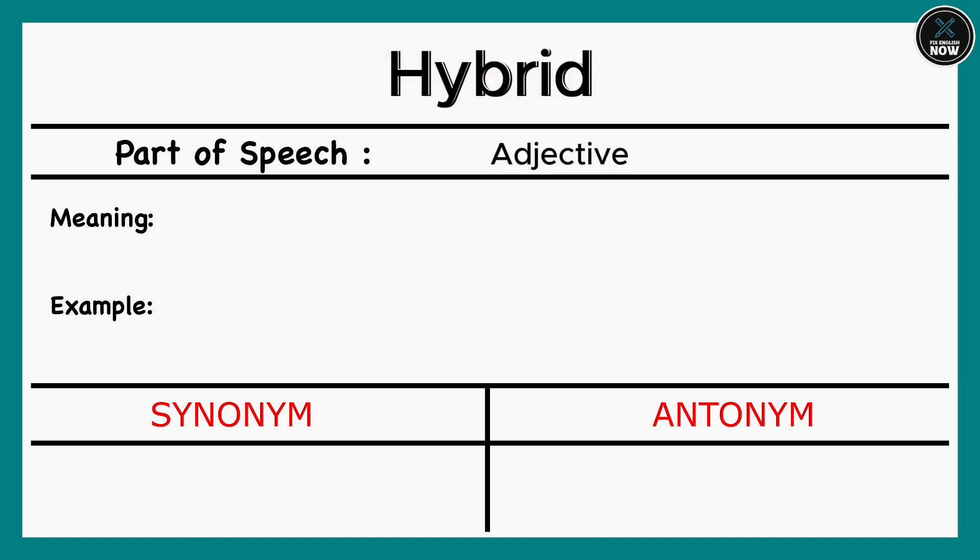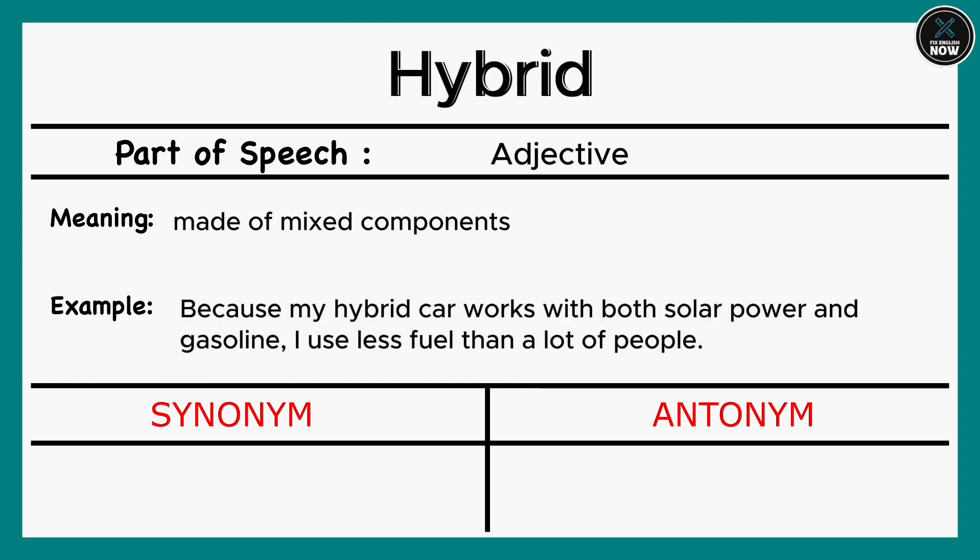Hybrid: Made of mixed components. Example: Because my hybrid car works with both solar power and gasoline, I use less fuel than a lot of people. Synonyms: Half-breed, Cross-breed. Antonym: Pure-bred.